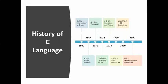Around 1978, Kernighan and Ritchie published a book titled 'K&R C.' In 1989, the ANSI committee gave a standard for C, which is why it is named ANSI C. In 1990, both ANSI and ISO gave a standard for C, called ANSI/ISO C. Finally, around 1999, the C99 standardization committee gave a standard called C99.